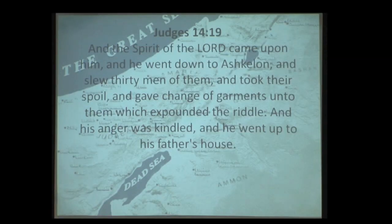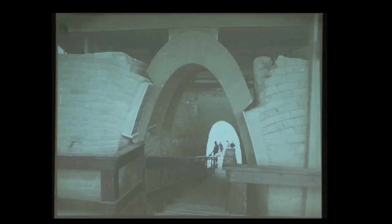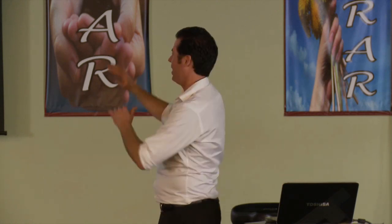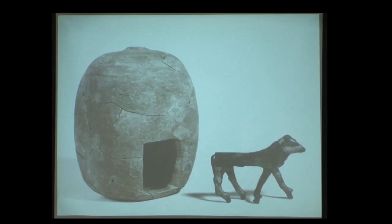Judges 14:9: 'The Spirit of the Lord came upon Samson, and he went down to Ashkelon and slew 30 men of them.' When Samson came down to Ashkelon, he would have walked through that gate — just use your sanctified imagination, clean it up, fix the bricks, and that's the gate Samson walked through. Right before the gate, archaeologists found a little hill with a temple to Baal, and among other things, they found a household deity — the animalistic representation of what Baal looked like.